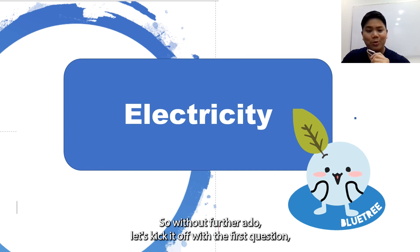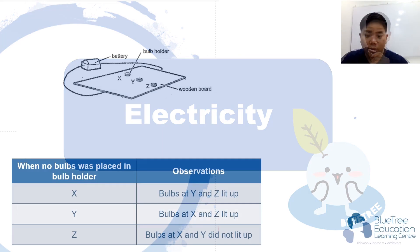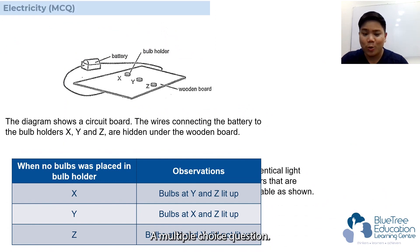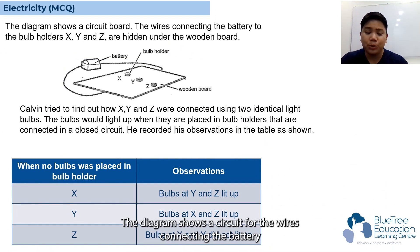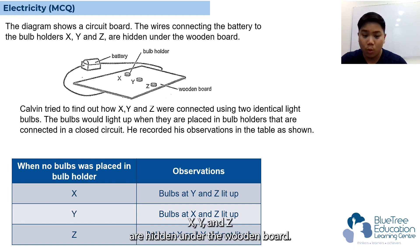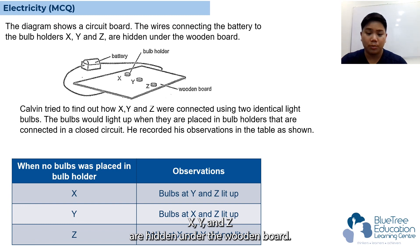So without further ado, let's kick it off with the first question — a multiple choice question. The diagram shows a circuit board. The wires connecting the battery to the bulb holders X, Y, and Z are hidden under the wooden board.